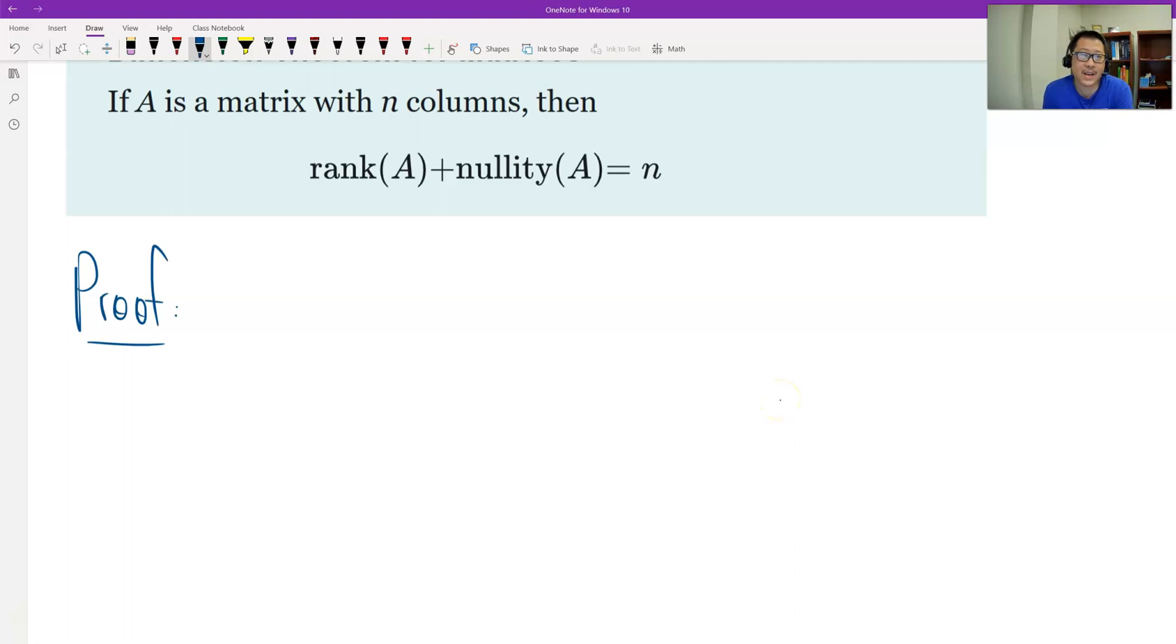First, I need to introduce the reduced row echelon, because both the rank and the nullity link to the reduced row echelon. Suppose by row operations, the matrix A can go to the reduced row echelon R.